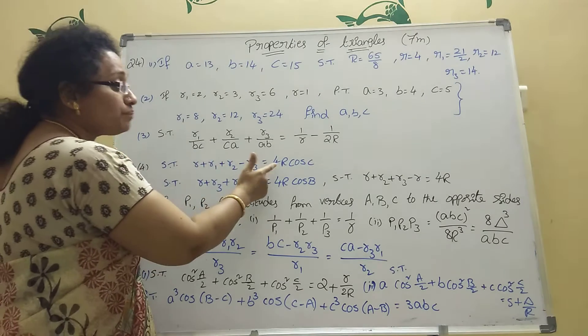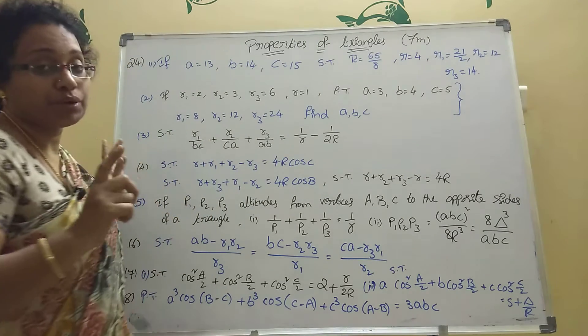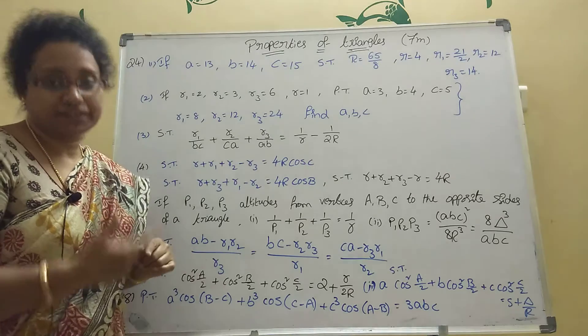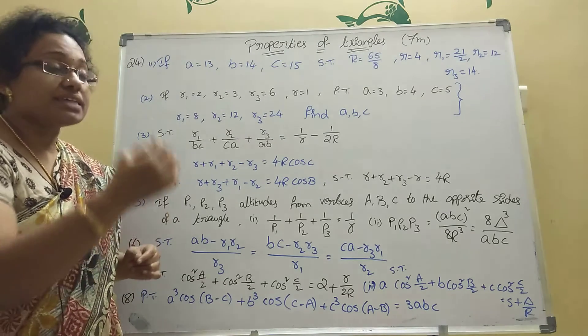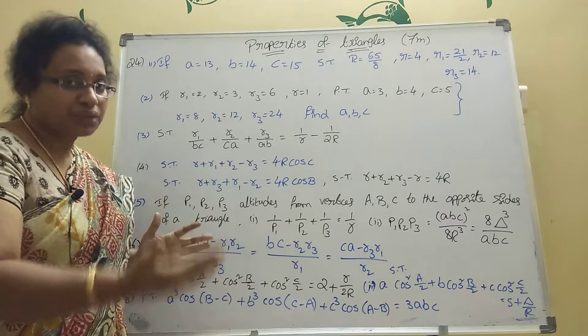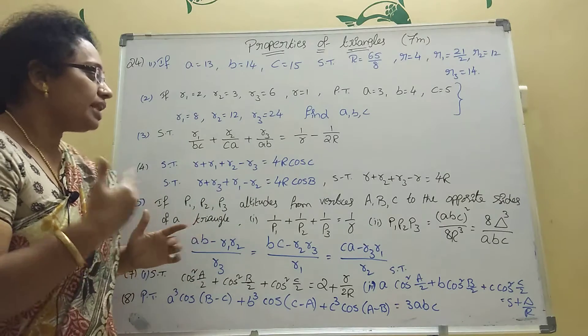What is the formula? Small r equal to 4R sin A by 2, sin B by 2, sin C by 2. Small R1 is sin A by 2, cos B by 2, cos B by 2 like that there. Like that there are formulas.